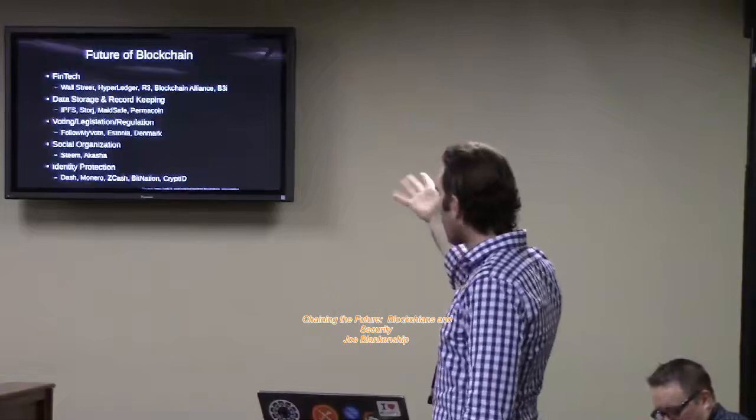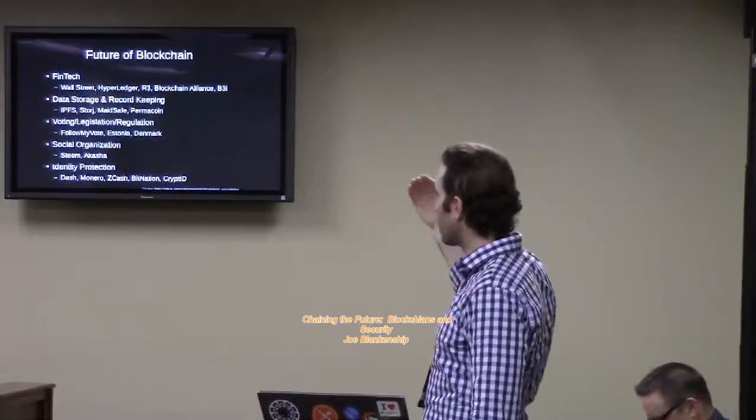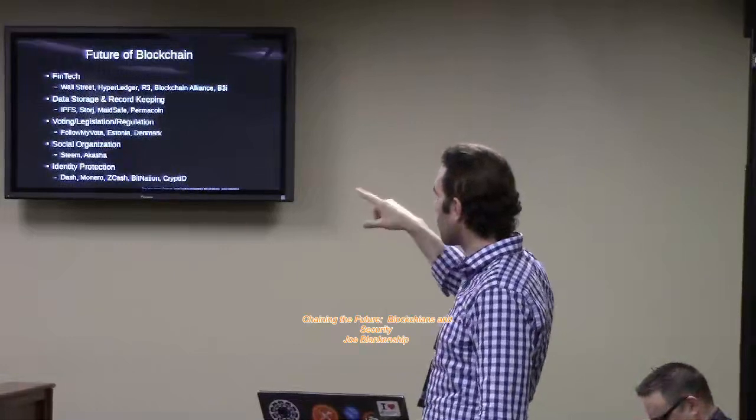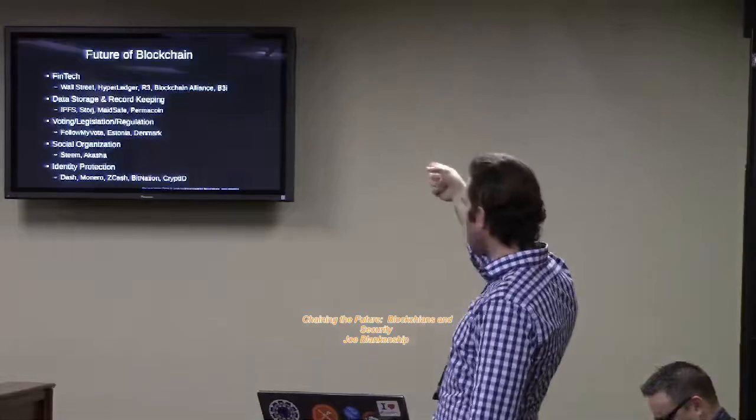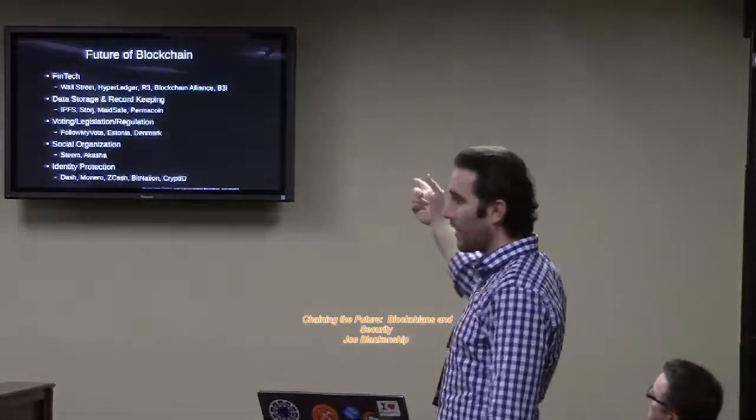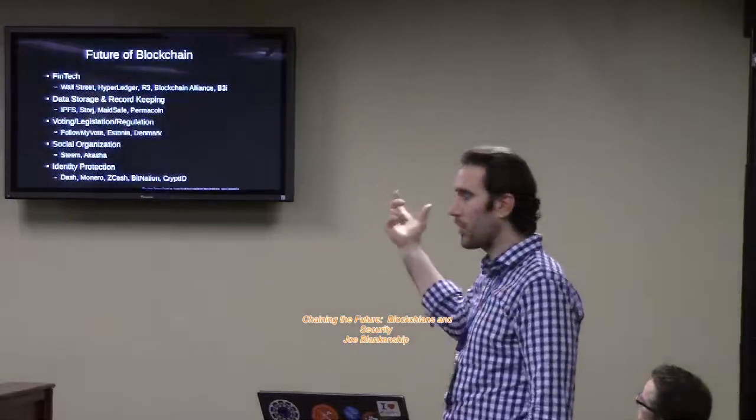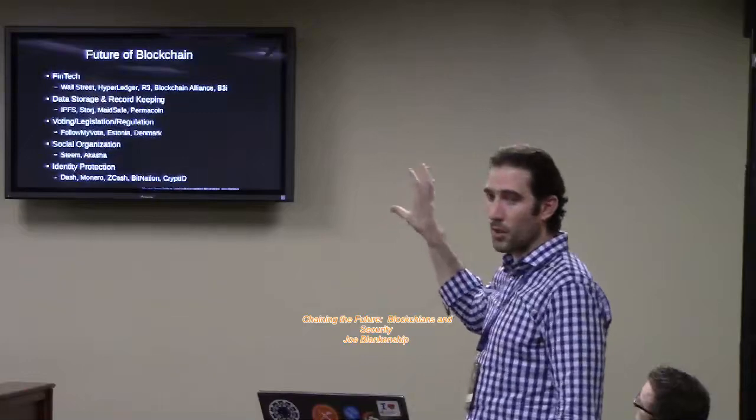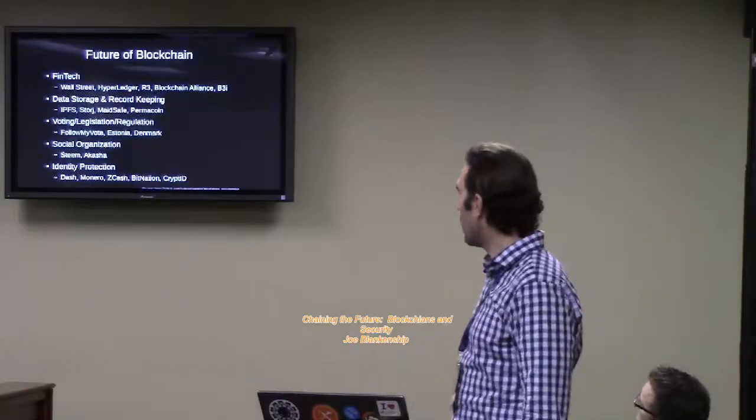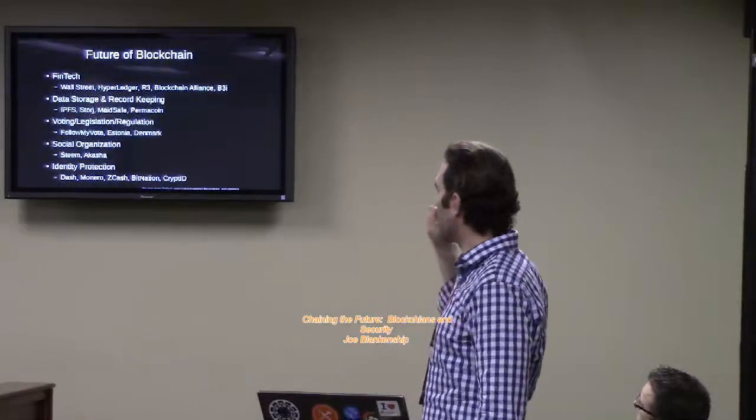Big names to look for. The four big consortiums in terms of FinTech are Wall Street blockchain alliance, Hyperledger, the R3 consortium. And P3I, so there's five. P3I is one I added last minute because they're kind of the new insurance kids on the block. They're trying to do what companies are doing in terms of putting insurance mechanisms and insurance companies on the blockchain. Which I think is going to be very interesting in the coming years.